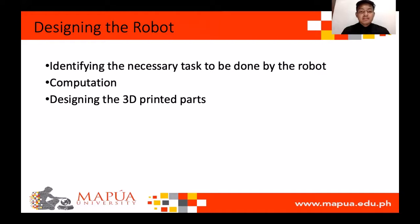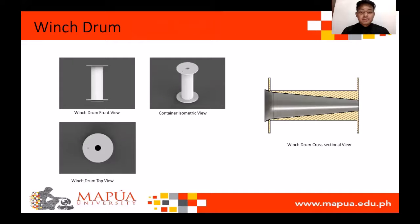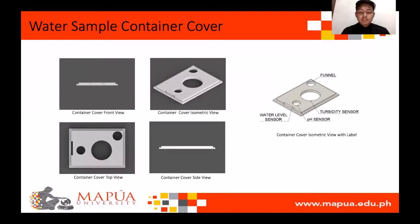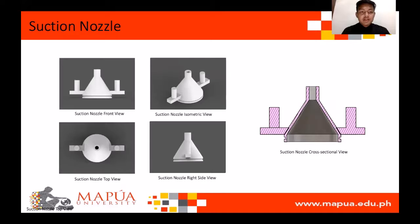The 3D printed parts include: the winch drum, which is designed to have a conical cross section for water to flow through; the water sample container, designed with a flat floor surface where three corners away from the discharge hole are raised so that water will flow to the discharge hole; the water sample container cover, designed to have four hoses for pH, turbidity, water level sensor, and the panel to be mounted; and the suction nozzle, a conical shaped tube where suction of water happens, with a screen filter mounted to the larger hole and the smaller hole for hose connection.